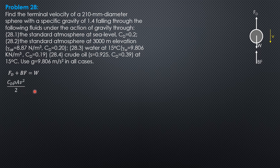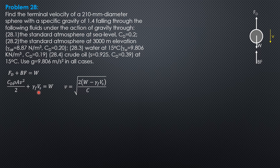The buoyant force is gamma of fluid times volume of sphere, and this equals the weight. Solving for terminal velocity, it is the square root of 2 times the quantity (weight minus gamma of fluid times volume of sphere), divided by the coefficient of drag times density times projected area.